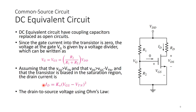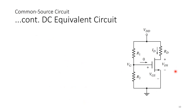At the drain-to-source voltage, using Ohm's law — if we know ID, we can use Ohm's law to find VDS from VDD minus VD, which gives the voltage drop across RD, which equals ID times RD. But VD and VDS are the same because VS is zero, so VDS equals VD minus zero. This gives us the expression for the drain-to-source voltage.